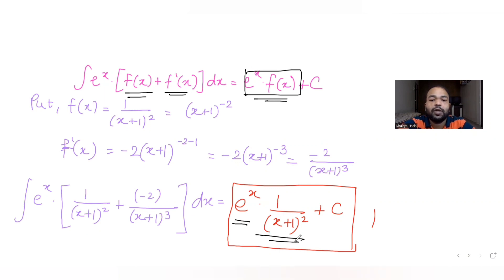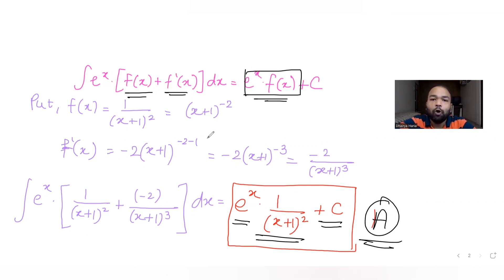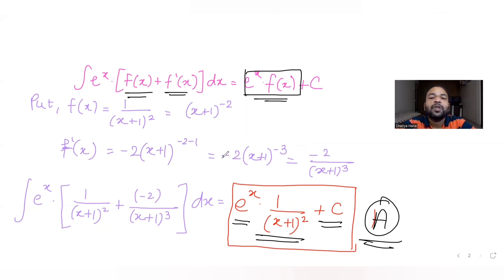Then we used the identity: the integral of e raised to x into [f(x) plus f'(x)] dx equals e raised to x times f(x) plus C, giving the answer e raised to x times 1 upon (x plus 1) the whole square, plus C. I hope you have understood how to solve this type of integration question. Please like, share, and subscribe to my channel, and share these videos with your friends preparing for JEE. Thank you!